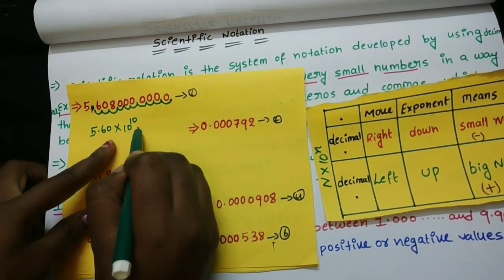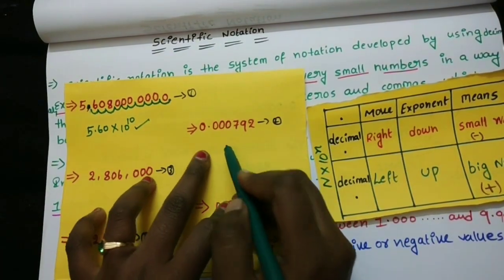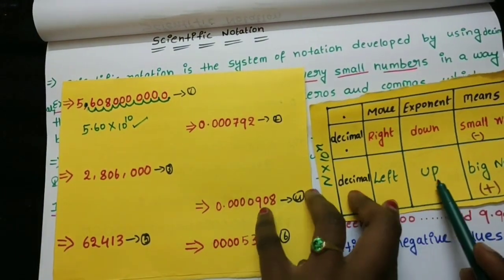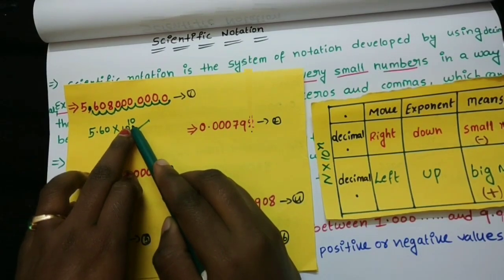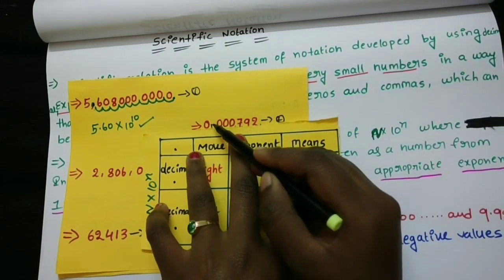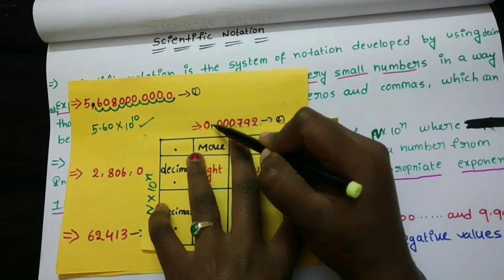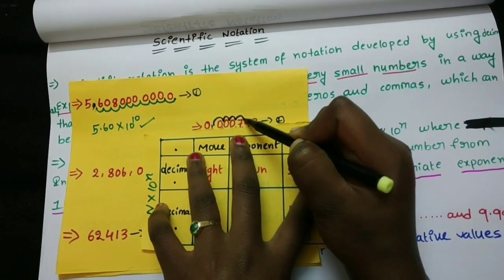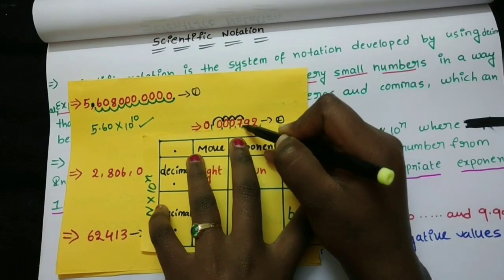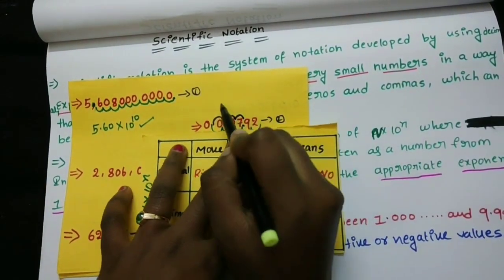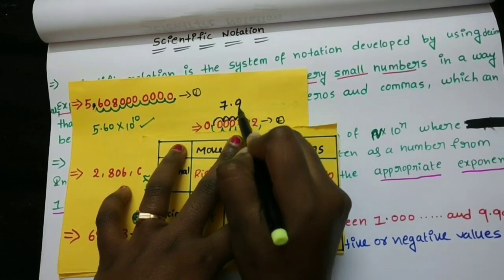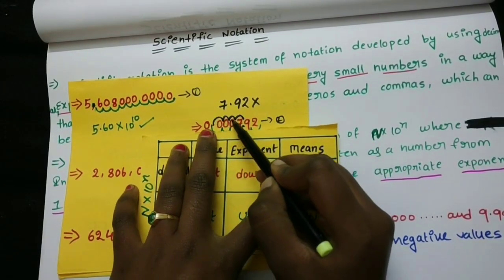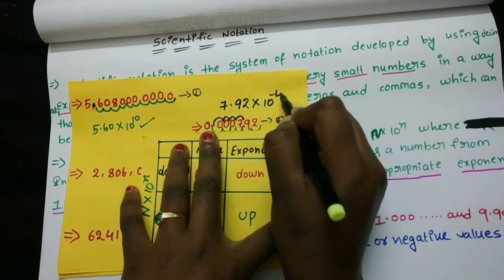That is the correct answer. For the next example, you have to look at the left side — if the number is big, the exponent is a positive number. For the second example, the number becomes 7.92 into 10 to the power of minus 4, counting 1, 2, 3, 4 places. The exponent is negative because the decimal moves down.